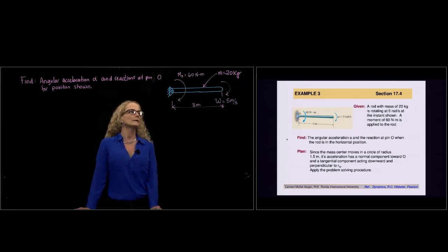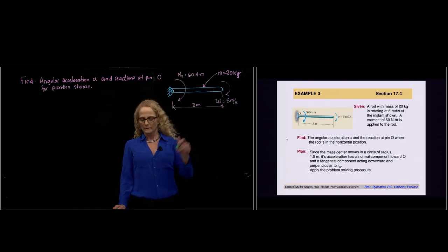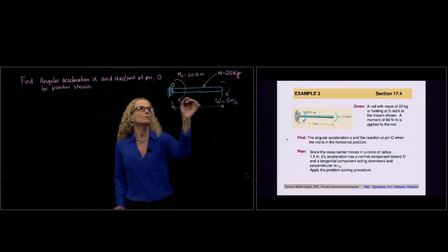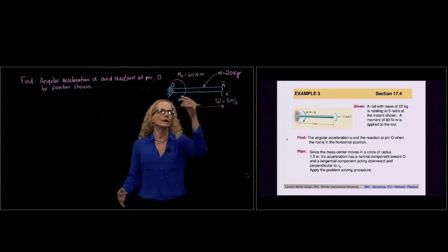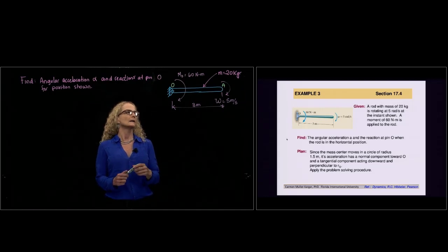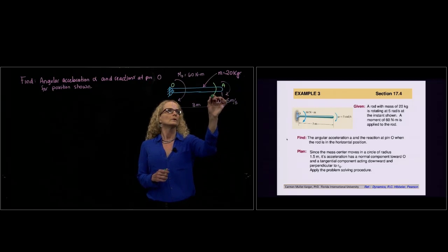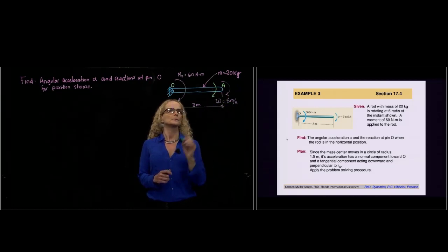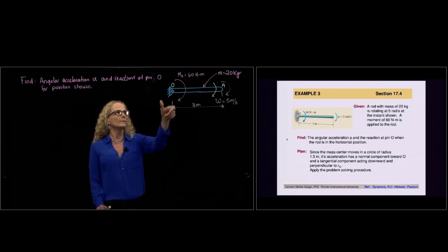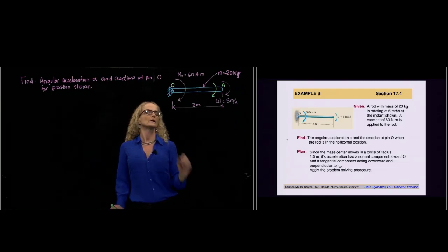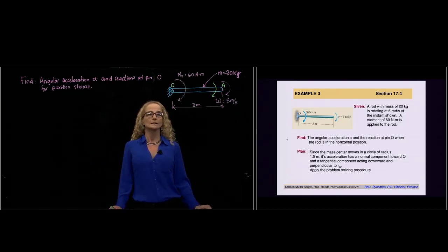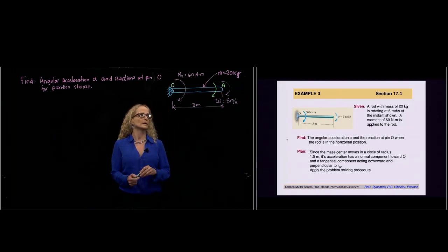So in this problem we have a rod. Let's give it a name. This is O, and we can call this point A. Rod OA has angular velocity for the position shown of 5 meters per second. And one moment is applied, which is with a value of 60 newton per meter. And the mass of the rod is 20 kilograms with a length of 3 meters.